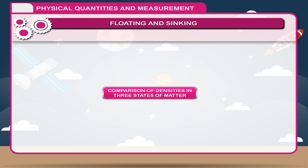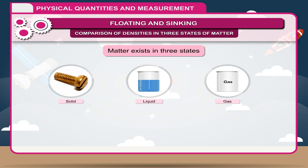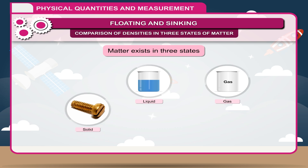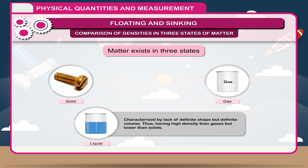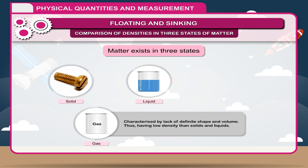Matter exists in three states: solids, liquids, and gases, each with its own special characteristics. The solid state is characterized by definite shape and definite volume, and thus has higher density than liquids. The liquid state is characterized by lack of definite shape but definite volume, and thus has higher density than gases but lower than solids. The gaseous state is characterized by lack of definite shape and volume, and thus has lower density than both solids and liquids.